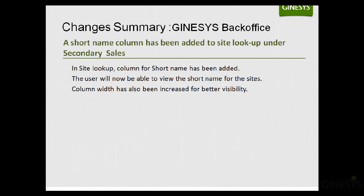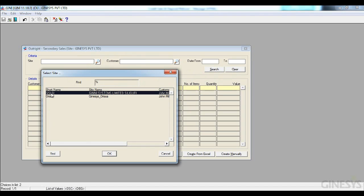The next change is in Genesis Backoffice: a short name column has been added to the site lookup under secondary sales. Users can now view the short name for each site, and the column width has been increased for better visibility. Here it is — the short names for the sites are displaying and the layout has been resized accordingly.